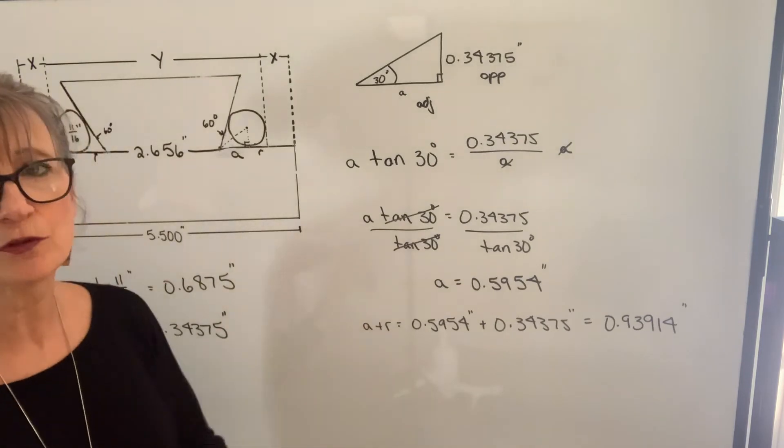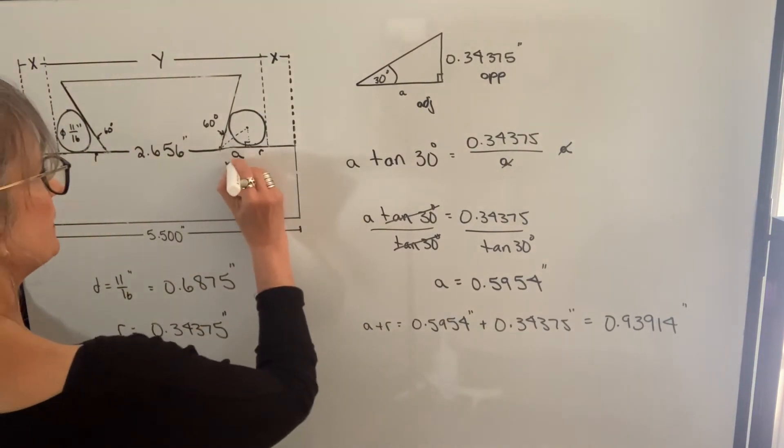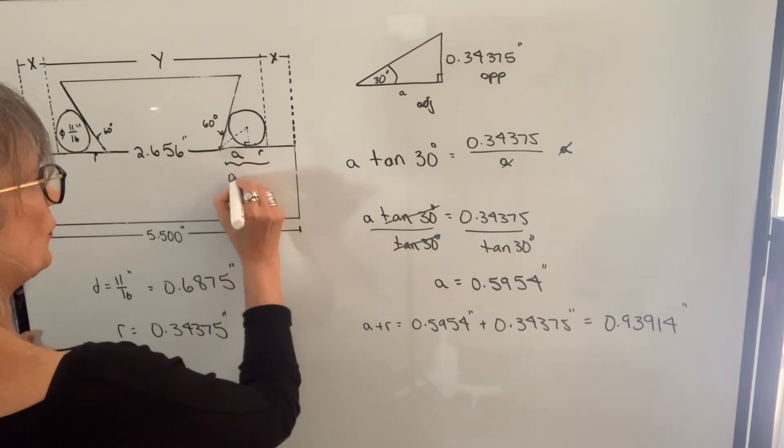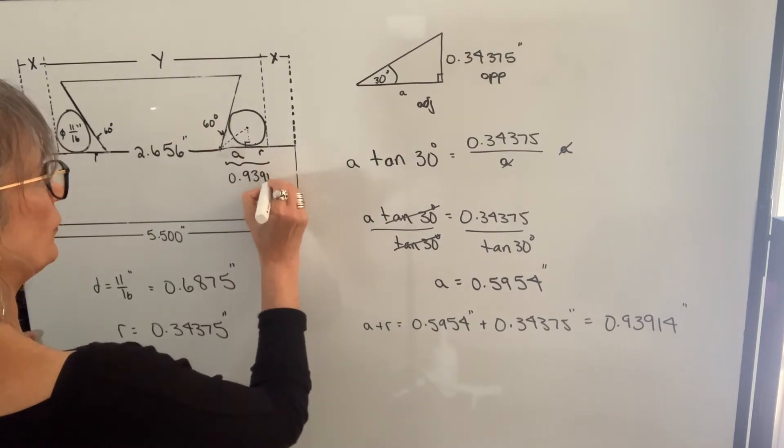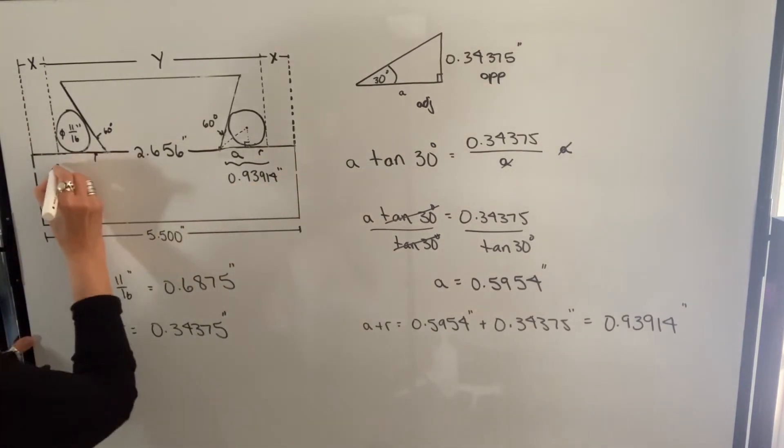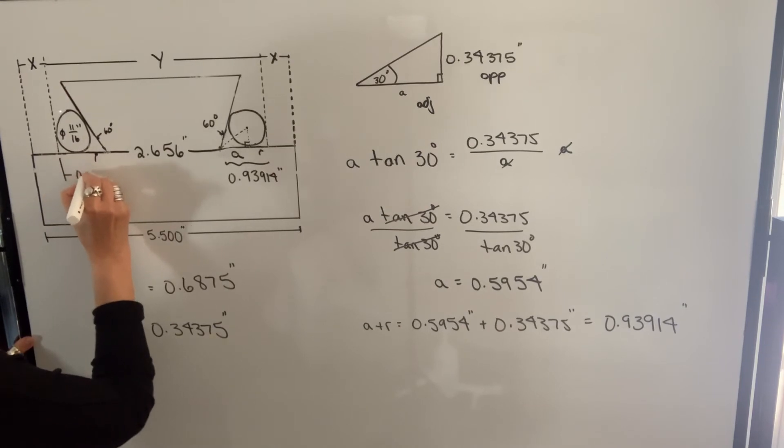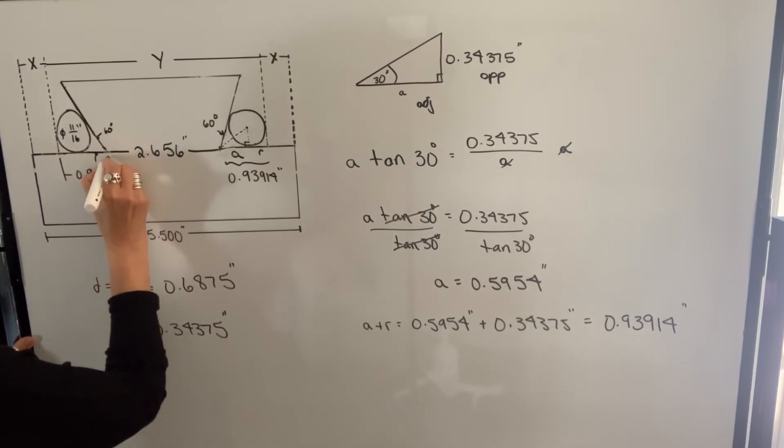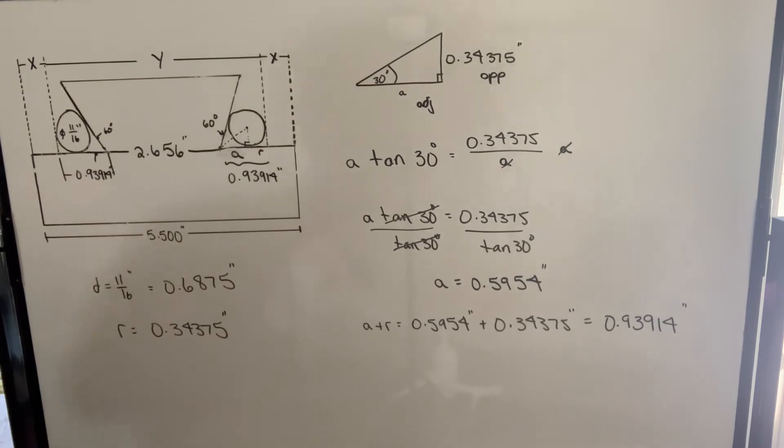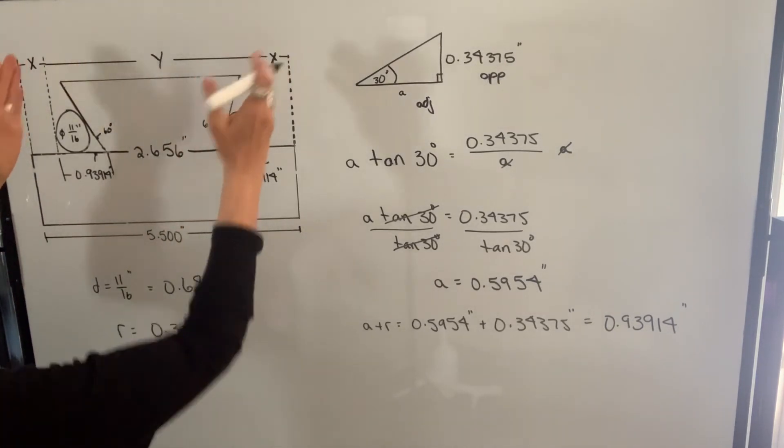Again, I'm keeping the actual value on my calculator. So I know this distance here, this length here is 0.93914 inches. I know this length here is the same. Therefore, I can find both Y and X.